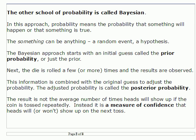Now let's look at the other school, called Bayesian statistics or the Bayesian school of statistics. It is named after Reverend Thomas Bayes who lived in England, and his office, so to speak, was the pubs, where he computed probabilities for people betting on games of chance.